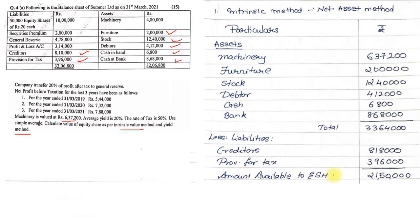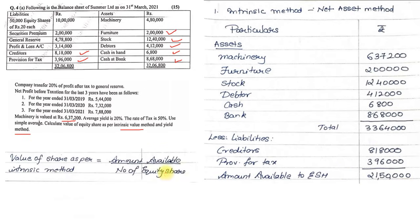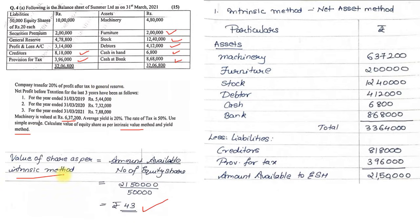The formula for Intrinsic Value per share is: Amount available to equity shareholders divided by Number of equity shares. Amount available is 21,50,000. Equity share capital is 10,00,000 at face value Rs. 20, giving 50,000 shares. So the value per share = 21,50,000 / 50,000 = Rs. 43 per share as per the Intrinsic Value Method.